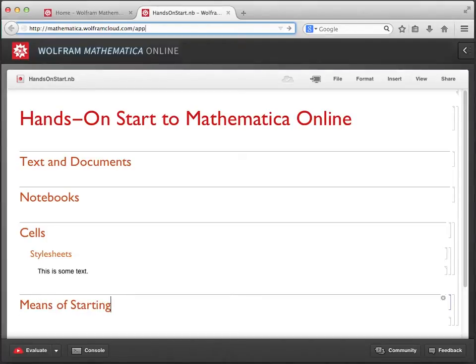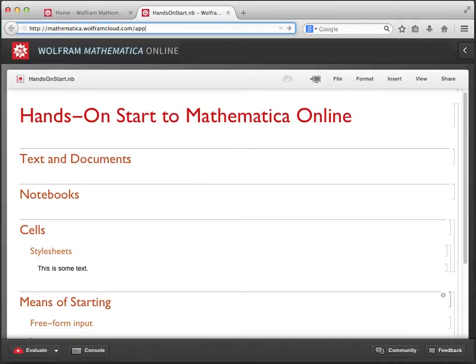Now I want to make two subsection cells, because there are two ways to input in Mathematica Online, and I want to have a subsection for each of them. I'm going to press the down arrow key to get my cursor ready, and now create a new subsection by using the keyboard shortcut, Alt-5, or Command-5 on the Mac. Let's call the first one Freeform Input. Then do this one more time with the keyboard shortcut, Alt-5, to create a subsection called Wolfram Language.